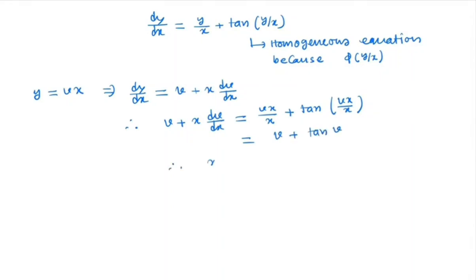v cancels out, so x dv/dx = tan v. If we separate this equation we get dv/tan v = dx/x. By integrating we have 1/tan v, which is nothing but cot v dv = dx/x.